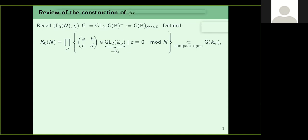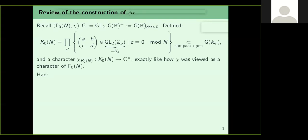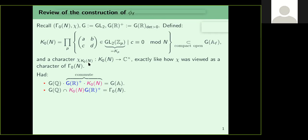We put a topology on all these groups and K₀(n) was compact open. We defined a character of K₀(n) using the same prescription with which we defined chi on Γ₀(n). Chi on Γ₀(n) took the matrix (A,B,C,D) to chi(D). Similarly, we had chi on K₀(n). Given a modular form F of weight k and level chi, we wanted to extend it to G(A), thinking of it as a function on G(A)/G(Q), for which we had two particular observations.